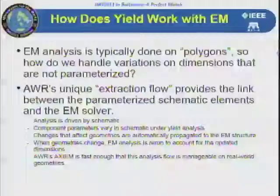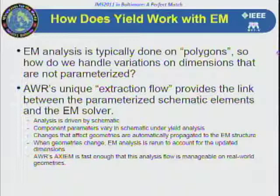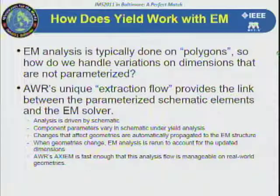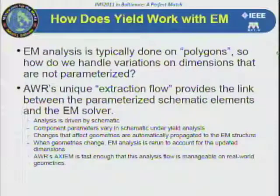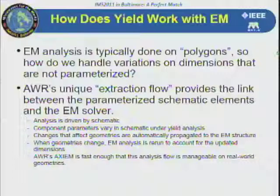What's different, and what we are now releasing in AWR 2011, is the ability to parameterize electromagnetic structures directly. EM analysis is typically done on simple polygons — they can be arbitrarily drawn and the mesher handles those geometries — but there is typically no parameterization we can use to associate statistical variation. That's the novel part of our new electromagnetic-based yield and optimization.